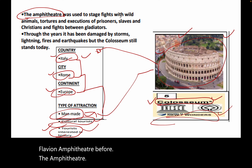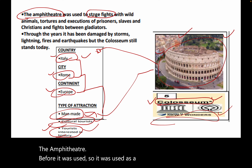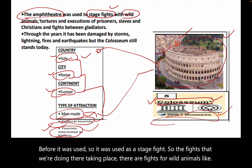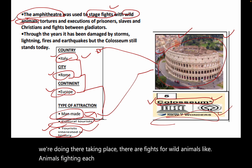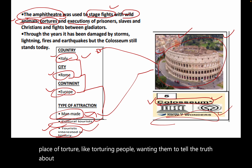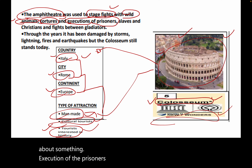The Colosseum was used as a stage for fights — animals fighting each other and wild animal fights. It was also a place of torture, where people were forced to tell the truth, and a place where prisoners were held and executed.